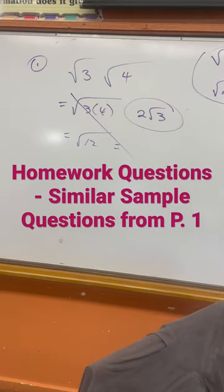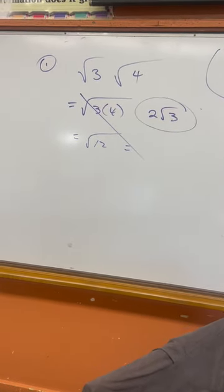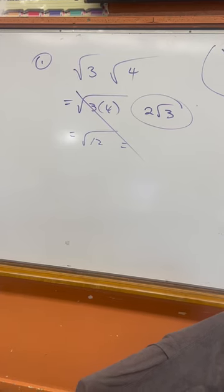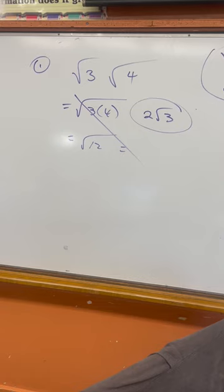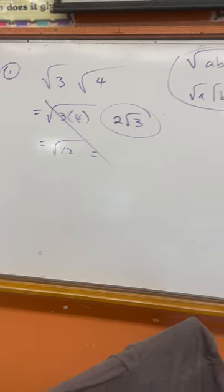Today we worked on questions that were like the first page of the homework. Root 3 times root 4 is kind of like number 1. Notice that you really don't have to make it root 12. You can just see that root 4 is a perfect square and you get 2 root 3.